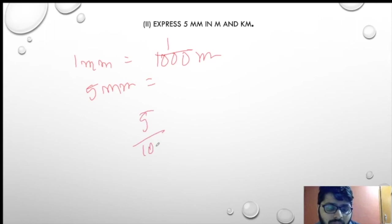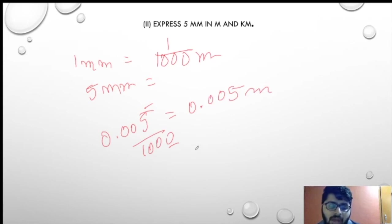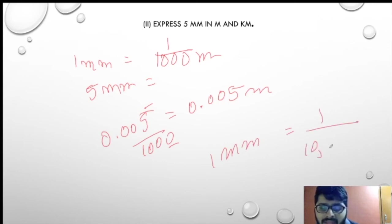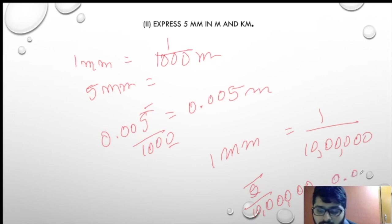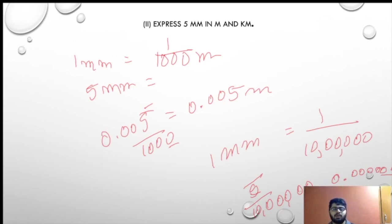Next: 5 mm to kilometer. We know 1 mm equals 1 upon 10 lakh. So 5 upon 10 lakh gives us 0.000005 kilometer. All these sums are solved easily.